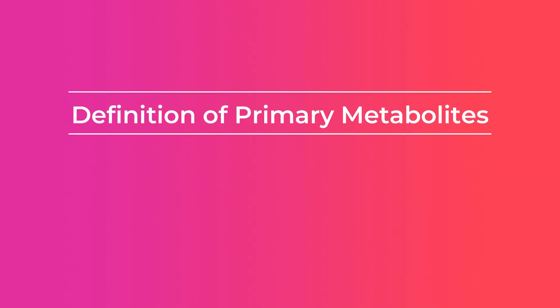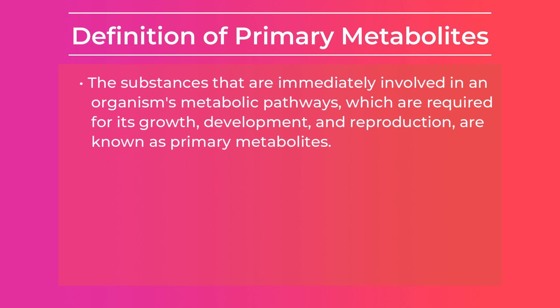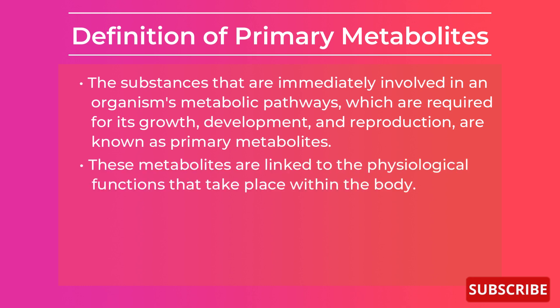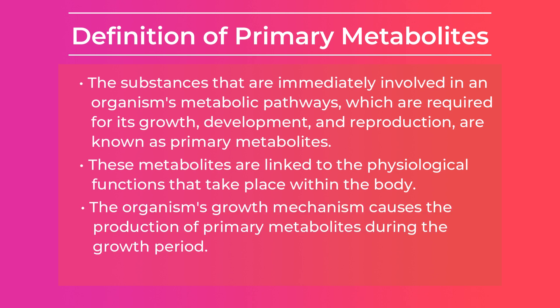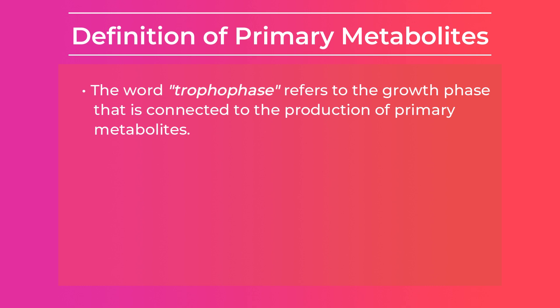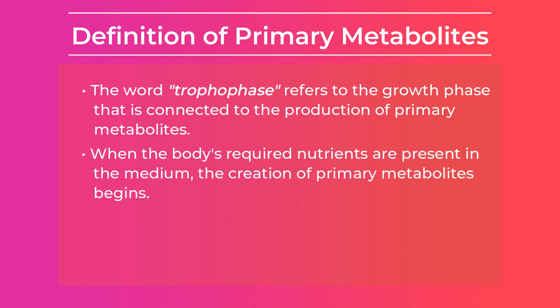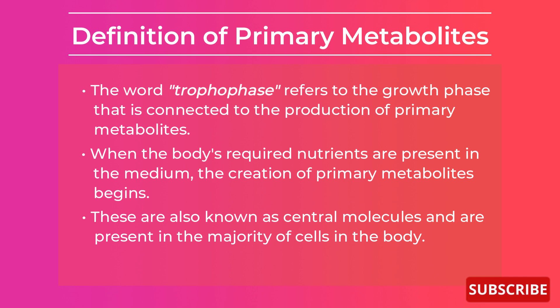Let's start with the definition of primary metabolites. The substances that are immediately involved in an organism's metabolic pathways, which are required for its growth, development, and reproduction, are known as primary metabolites. These metabolites are linked to the physiological functions that take place within the body. The organism's growth mechanism causes the production of primary metabolites during the growth period. The word 'trophophase' refers to the growth phase connected to the production of primary metabolites. When the body's required nutrients are present in the medium, the creation of primary metabolites begins.